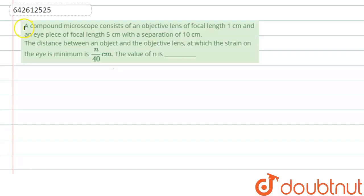Hello everyone. Let's start the question. A compound microscope consists of an objective lens of focal length 1 cm and an eyepiece of focal length 5 cm with a separation of 10 cm. The distance between an object and objective lens at which the strain on the eye is minimum is n by 40 cm. The value of n is.